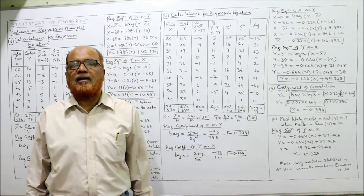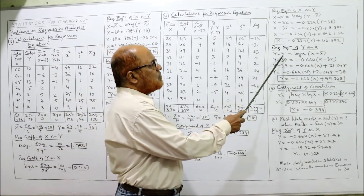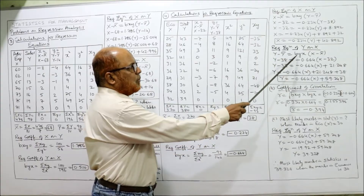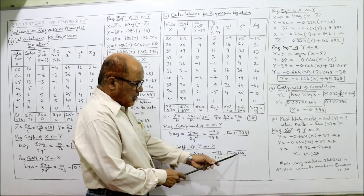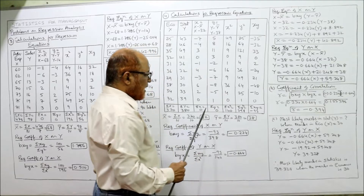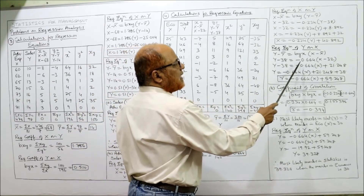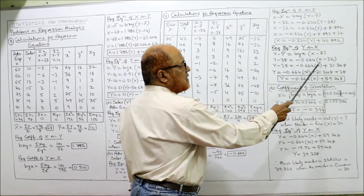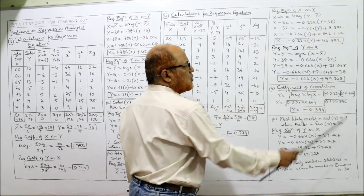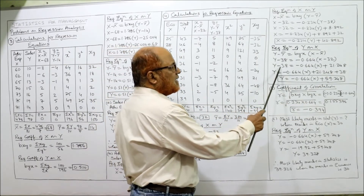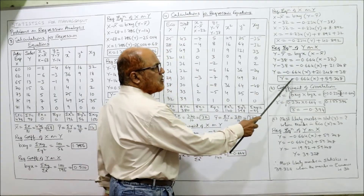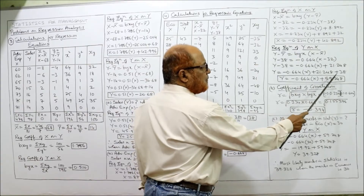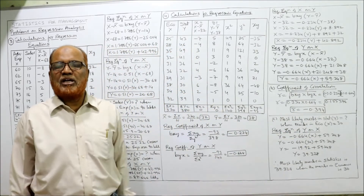Regression equation of Y on X: Y minus Y bar equals BYX times (X minus X bar). With Y bar equal to 38 and BYX equal to minus 0.664: Y minus 38 equals minus 0.664 times (X minus 32). Opening the bracket: minus 0.664X plus 0.664 times 32 equals 21.248. Bringing 38 to the RHS: Y equals minus 0.664X plus 21.248 plus 38, giving Y equals minus 0.664X plus 59.248. Part A (two regression equations) is complete.